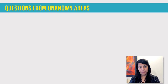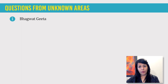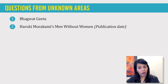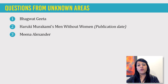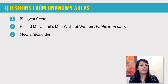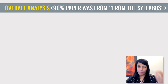Looking at the overall paper, there were a few topics which were new and not present in even the syllabus we recommend — just two or three. One was a question from the Bhagavad Gita — we still don't know exactly what the question was. One question came from Haruki Murakami's Men Without Women. Haruki Murakami is a writer we don't teach right now in the course because until this time no questions had come from him — but for the first time this time they asked. There was also a question from Michelle Alexander, though we cover her in our course but not in great detail. Otherwise, most students from my online course said 90% of questions were directly from the syllabus we recommend.